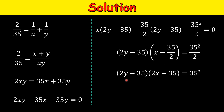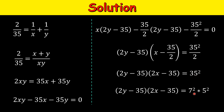Now we have the factored form: (2x minus 35) times (2y minus 35) equals 35 squared. We can break 35 into its prime factors — 5 and 7 — so 35 squared equals 5 squared times 7 squared. No other primes divide 35.